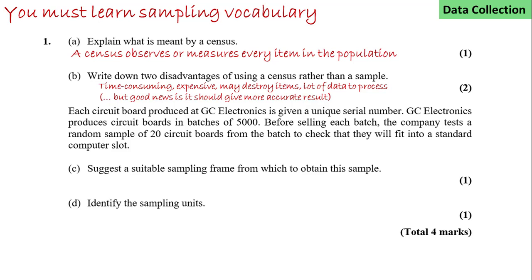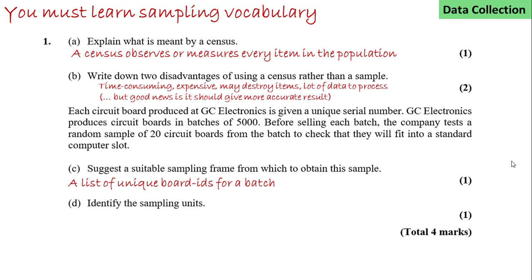Each circuit board produced at GC Electronics is given a unique serial number. GC Electronics produces circuit boards in batches of 5000. Before selling each batch the company tests a random sample of 20 circuits to check they will fit into a standard computer slot. The sampling frame will be the list of unique board IDs for a batch. With this list we can use a random number generator to select which boards to sample. The sampling units are the individual boards.